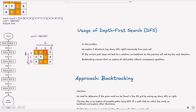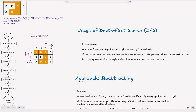For example, from cell C, we try to explore one path but it doesn't form ABCC, so we backtrack to C and explore other possible paths — that's what we call backtracking. Backtracking ensures we explore all valid paths without unnecessary repetition. If we visit a cell once, we mark it as visited so we don't visit it again — we'll see that in the code.